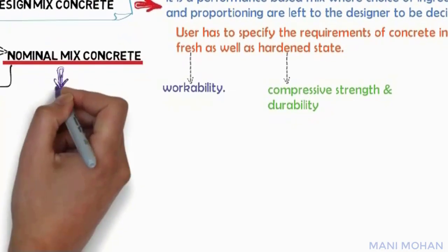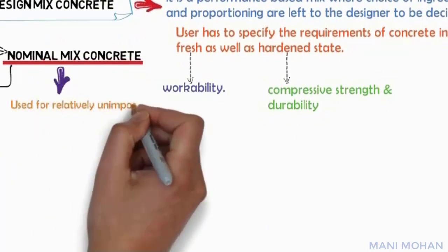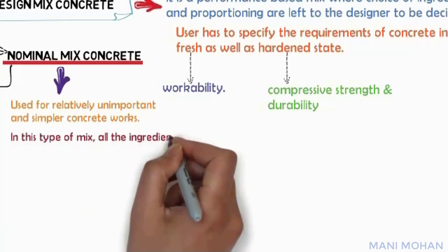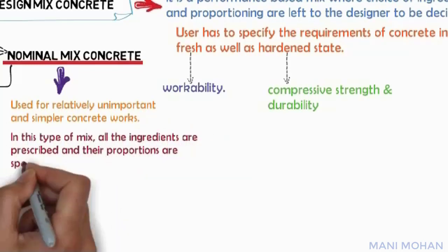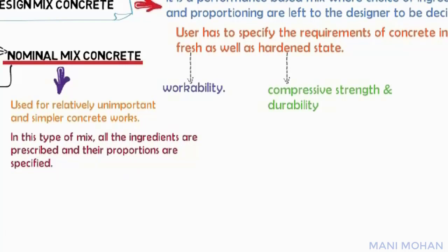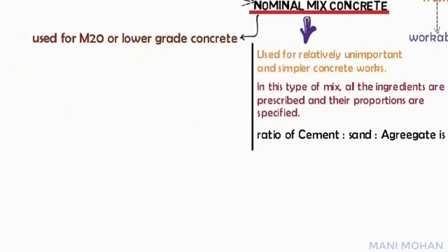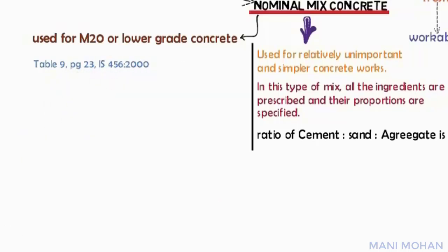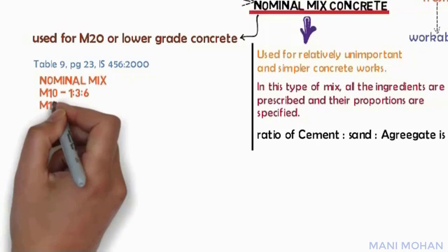Nominal mix is used for relatively unimportant and simpler concrete works. In this type of mix, all the ingredients are prescribed and their proportions are specified, so there is no scope for deviation by the designer. In simple terms, the cement-to-sand-to-aggregate ratio is fixed. Nominal mix concrete may be used for M20 or lower grade. Table 9, page 23 of IS 456-2000 provides the proportions for nominal mix concrete.